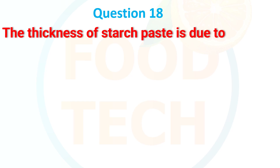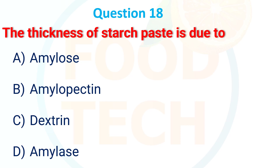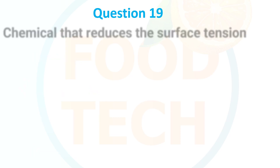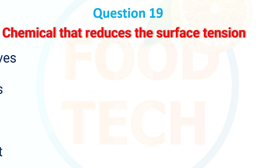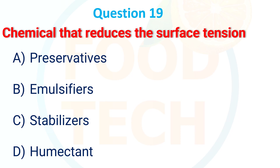The thickness of starch paste is due to: a) amylose, b) amylopectin, c) dextrin, d) amylase. The answer is amylopectin. Chemical that reduces surface tension: a) preservatives, b) humectant, c) stabilizer, d) emulsifier.